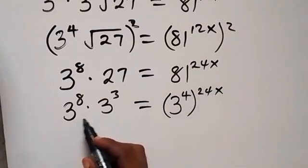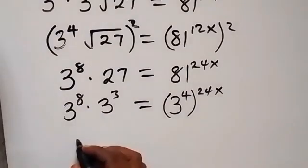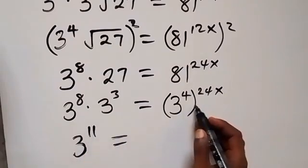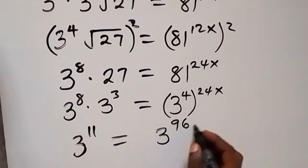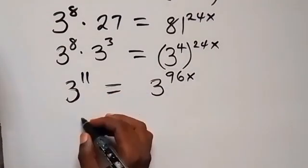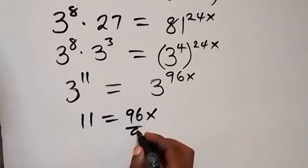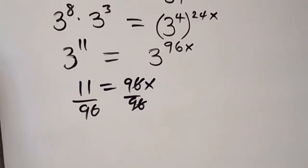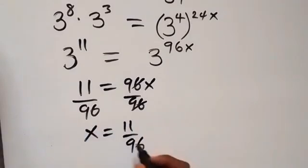Since they have the same base, by the law of indices we add the powers: 3 raised to power 8 plus 3, that's 3 raised to power 11, equals 3 raised to power 96x. Now we have the same base on both sides, so we equate the exponents: 11 equals 96x. Dividing both sides by 96, x equals 11 over 96.